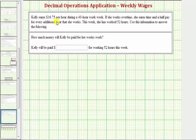Kelly earns $16.75 per hour during a 40-hour work week. If she works overtime, she earns time and a half pay for every additional hour that she works. This week she has worked 52 hours. How much money will Kelly be paid for her week's work?